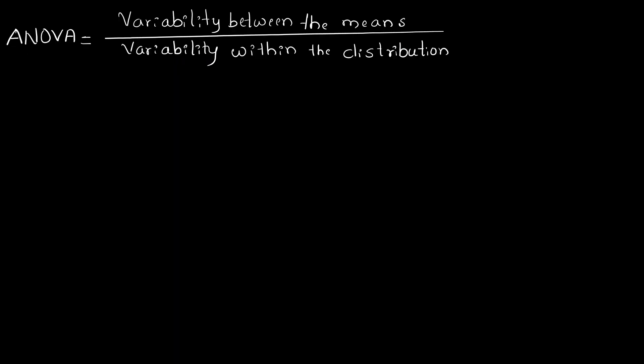In short, ANOVA is variability between the means divided by variability within the distribution. In the next class, I am going to explain the steps for calculations for one-way ANOVA, and we will solve examples. Till then, keep practicing. Take care. If you have not subscribed to my channel, do subscribe and support. Thank you.